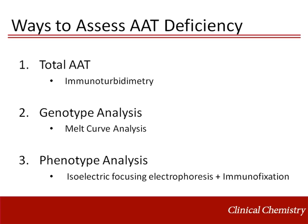Today, there are three main ways that AAT deficiency or sufficiency is measured in the clinical lab: assessing the total AAT concentration using immunoturbinometric assays; evaluating the presence of common alleles using cost- and time-efficient genetic testing; and finally, having the ability to identify both common and rare alleles using isoelectric focusing electrophoresis with immunofixation.